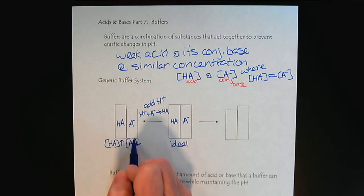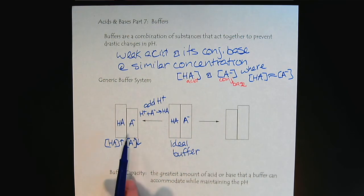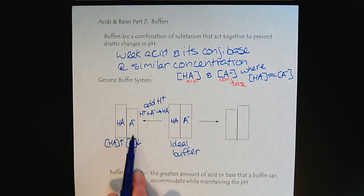But notice that there's still buffer capacity. Here's our ideal buffer and there are still weak acid and conjugate base present. So if more acid or base is added, there are components of the buffer system to react.